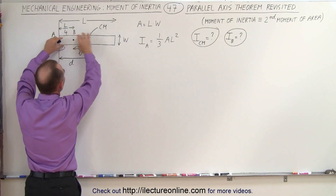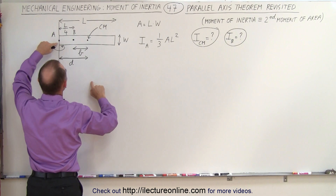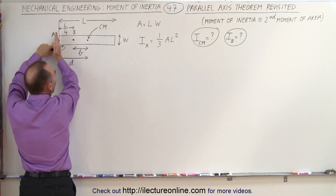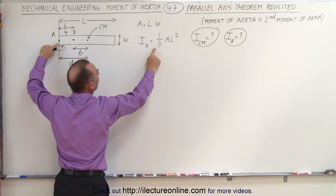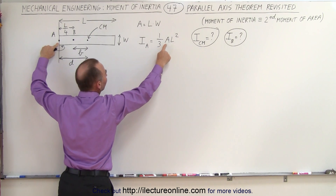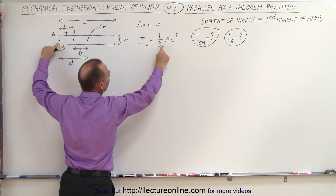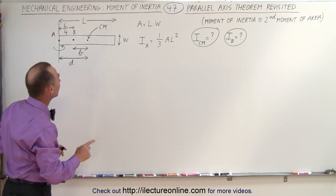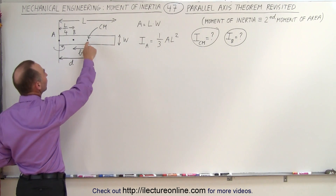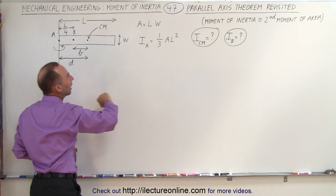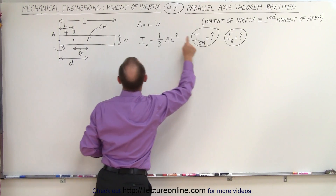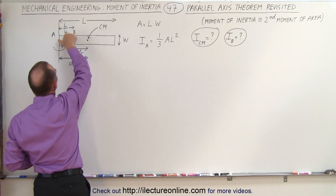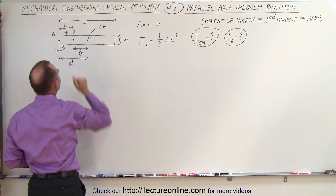The moment of inertia of a long object like this, rotating about the axis at the end of the object, is equal to one-third the mass times length squared, or one-third the area times length squared. What we're going to do now is find the moment of inertia at the center of mass, and find the moment of inertia at some other arbitrary point B — in this case, one-quarter the distance from the end.